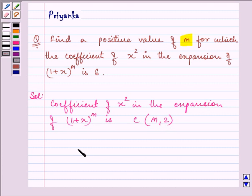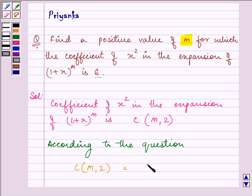Now according to the question, the coefficient is 6. So we have C(m,2) is equal to 6.